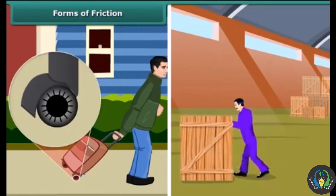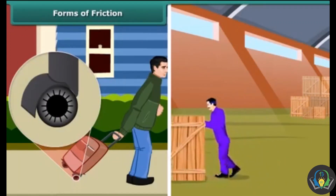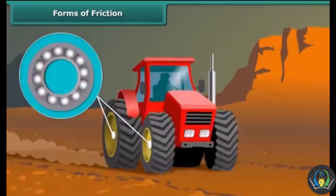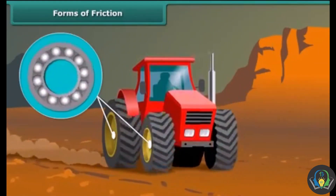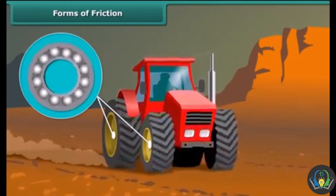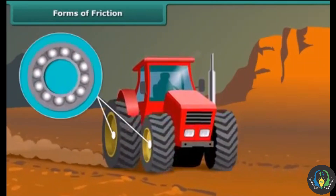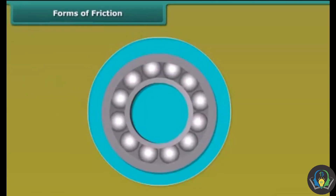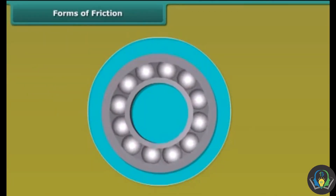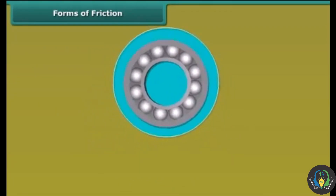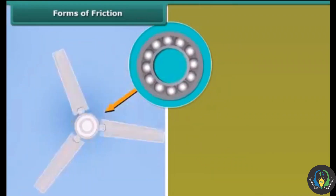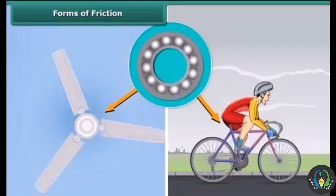Since rolling friction is smaller than sliding friction, sliding is replaced in most machines by rolling through the use of ball bearings. Common examples are the use of ball bearings between hubs and the axles of ceiling fans and bicycles.